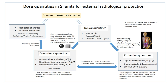Some effects of ionizing radiation on human health are stochastic, meaning that their probability of occurrence increases with dose, while the severity is independent of dose. Radiation-induced cancer, teratogenesis, cognitive decline, and heart disease are all examples of stochastic effects. Its most common impact is the stochastic induction of cancer with a latent period of years or decades after exposure.